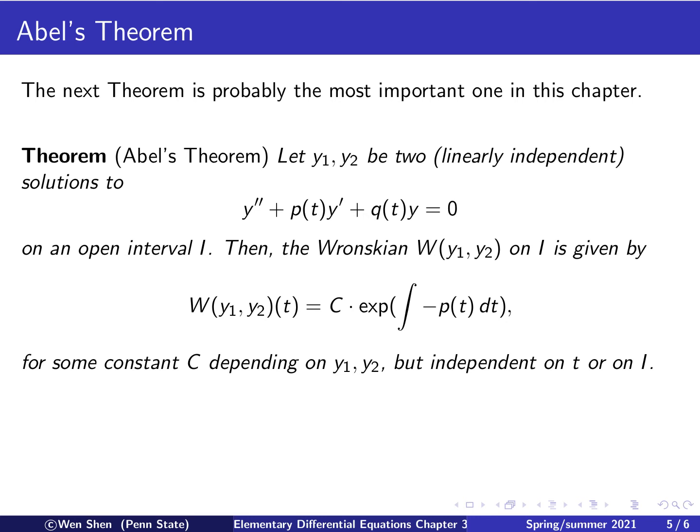Note that this negative p here is the coefficient in front of y' when the equation is in standard form, where the coefficient in front of y'' is 1. The constant c would depend on the solutions y1 and y2 — for example, you can multiply y1 by any constant to get another solution, which affects this constant — but c is independent of t or of the interval I. So constant c depends on the specific choice of y1 and y2, but is independent of the other parameters in the theorem.